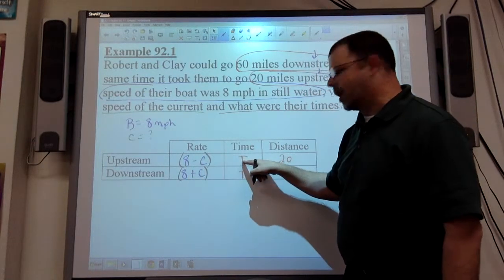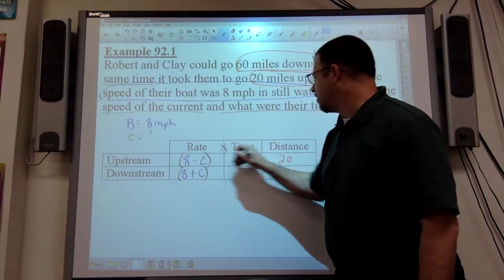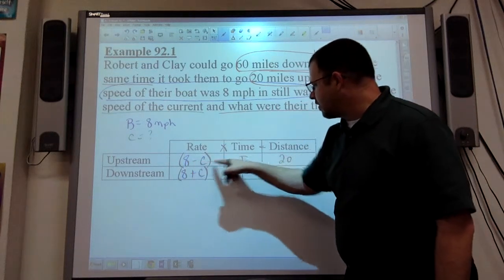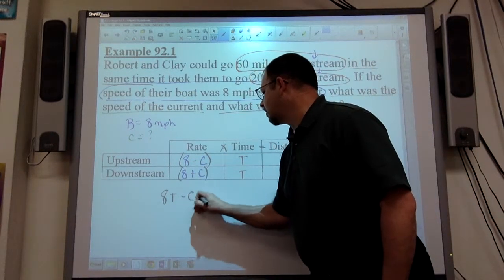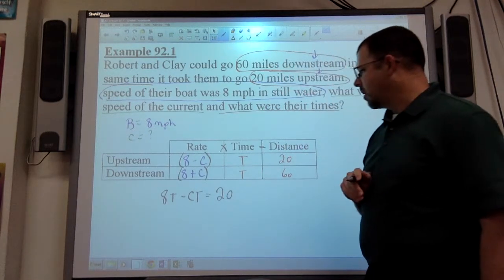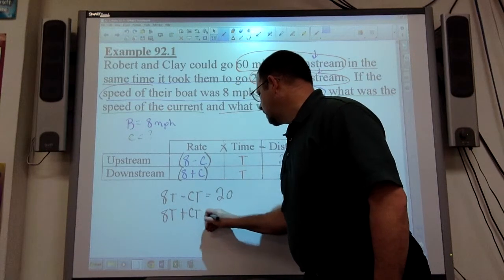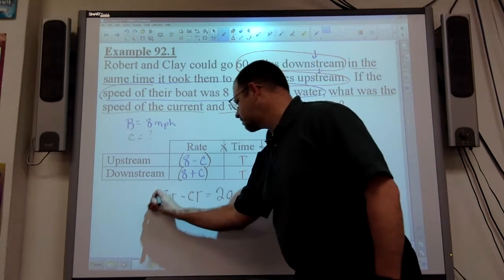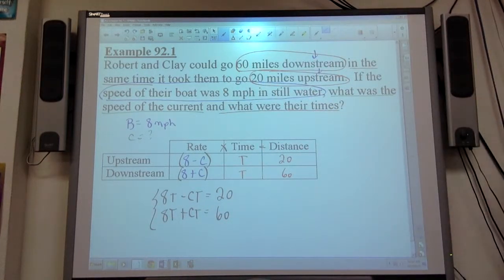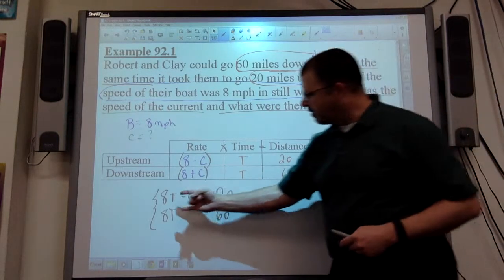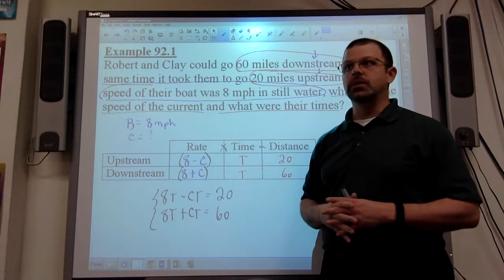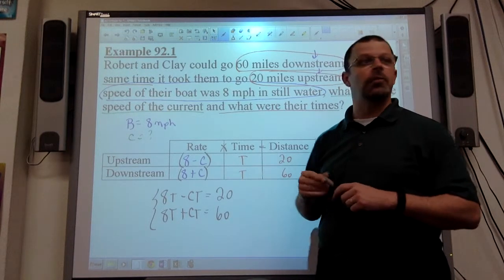And now it's just a matter of using the rate times time equals distance to create true equations. Notice that we have a binomial times a binomial, rate times time equals distance. So 8 minus C times T is going to be 8T minus CT is equal to the distance 20. And then this one's going to be 8T plus CT is equal to 60. And we create one of these advanced substitution or possibly elimination scenarios. You can see here the variable types. We have T variables and CT variables. So those are common terms, common types of terms, right? So elimination is legal.